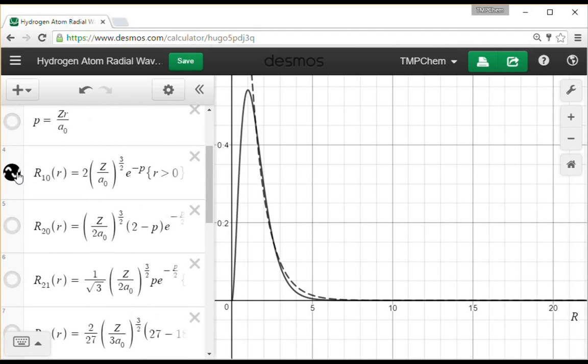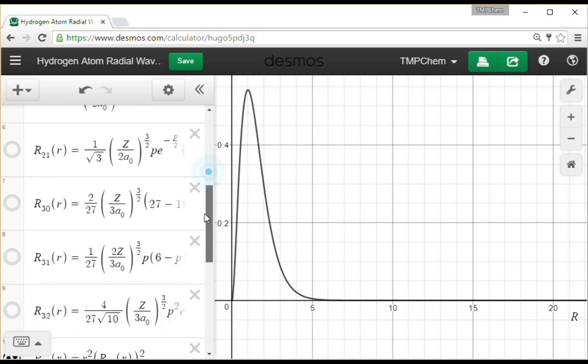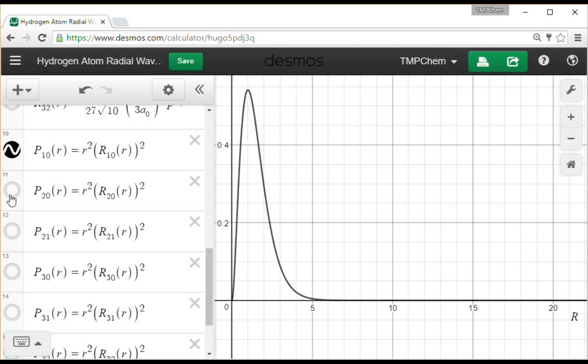For 2s, we have our radial node, remember. Our radial node means there's a point where there's no electron density at that radius. So we see most of our density is at a larger radius, and there's a little bit inside that first little sphere of density.